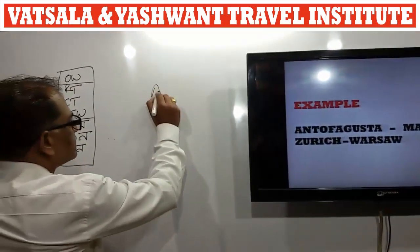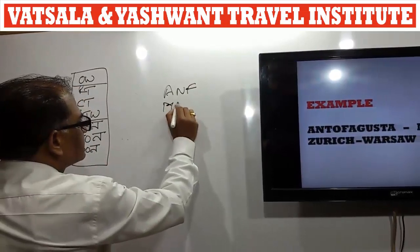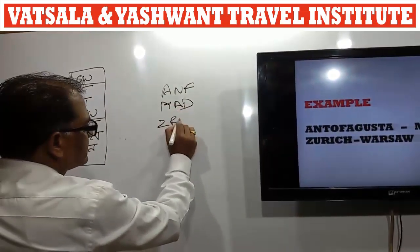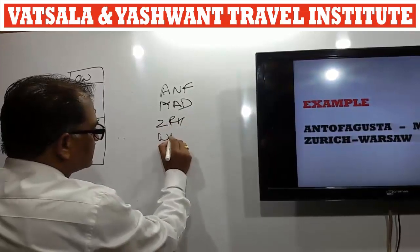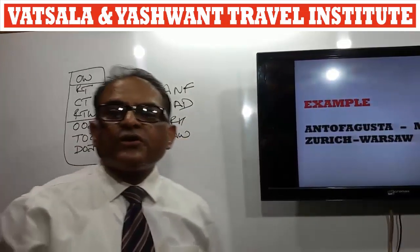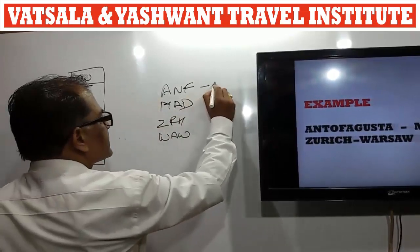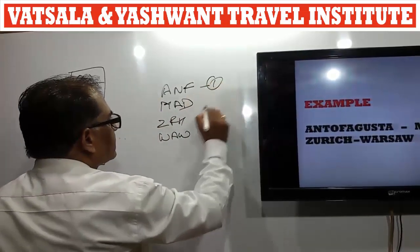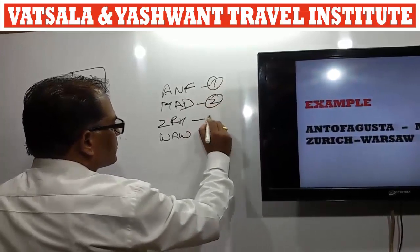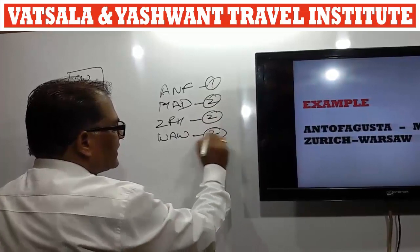The next itinerary is Antofagasta, Madrid, Zurich, and Warsaw. Antofagasta is in Chile — Chile is in Area 1. Madrid, Spain is in Area 2. Zurich, Switzerland is in Area 2. Warsaw, Poland is in Area 2.